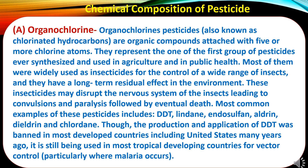Now pesticide classification based on chemical composition. The first group is organochlorines, also known as chlorinated hydrocarbons — organic compounds attached with five or more chlorine atoms. They represent one of the first groups of pesticides ever synthesized, used in agriculture and public health. Most were widely used as insecticides with long-term residual effects in the environment. These insecticides disrupt the nervous system of insects, leading to convulsions and paralysis followed by death. Common examples include DDT, lindane, endosulfan, aldrin, dieldrin and chlordane. Though DDT production and application was banned in most developed countries including the United States, it is still used in tropical developing countries for vector control, particularly where malaria occurs.